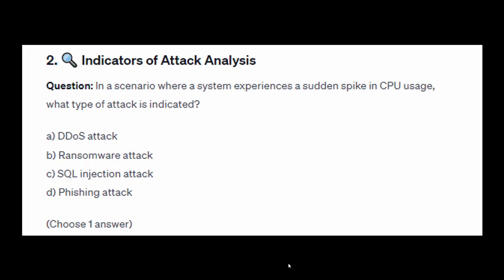For exam question number two: in a scenario where a system experiences a sudden spike in CPU usage, what type of attack is indicated? Is it A: DDoS attack, B: ransomware attack, C: SQL injection attack, or D: phishing attack?